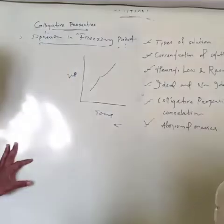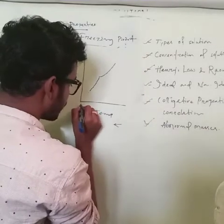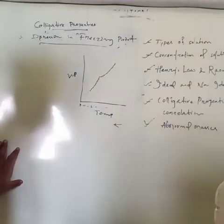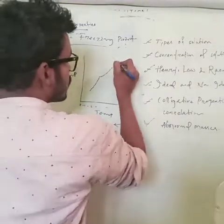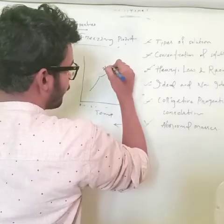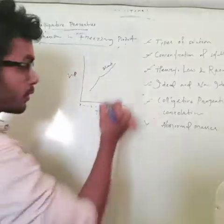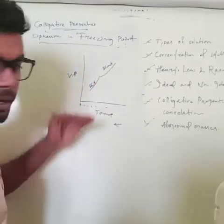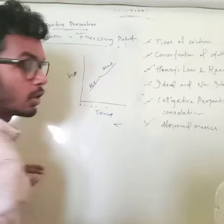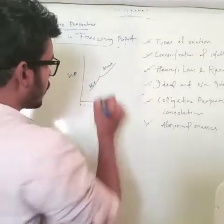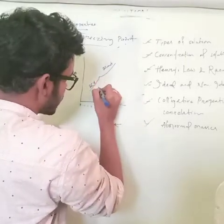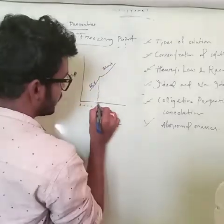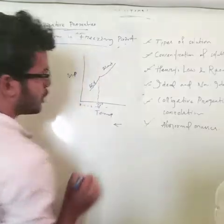Starting from 0, minus 1, minus 2 degrees — the liquid curve comes down. This is the pure solvent, and the solid curve is at minimum temperature. The point where the two curves meet is where it freezes. Let's call this TF⁰.